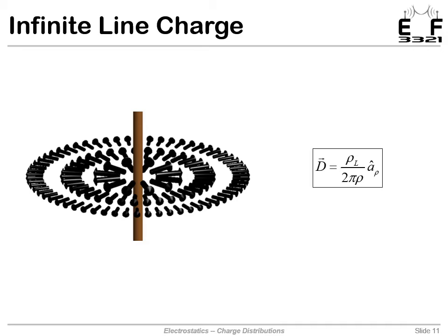Now, maybe we were expecting the one over rho squared type of dependence. That happens for the point charge when the energy is distributing itself over the area of a sphere. Well, here, it's not distributing itself in the same way. It's only distributing that energy over a circle. It's uniform in the vertical direction. So we only get a one over rho dependence. And notice the field is pointed straight out from that charge.